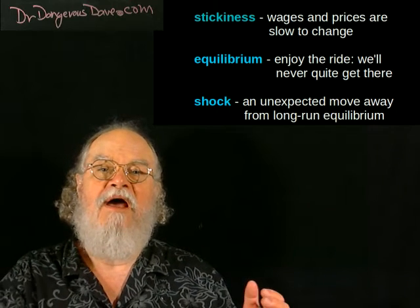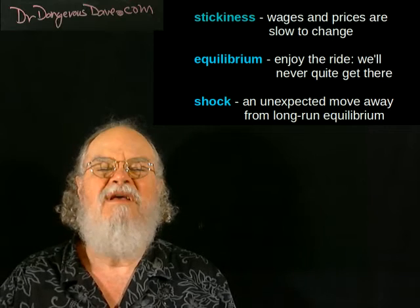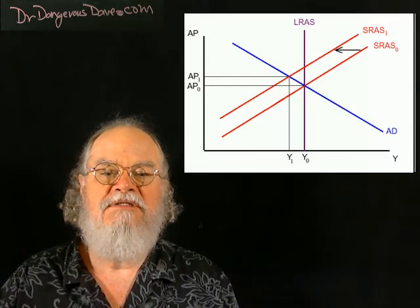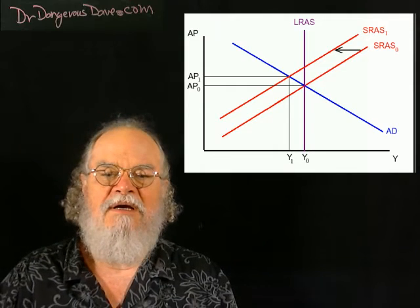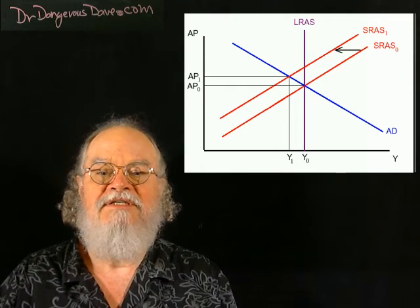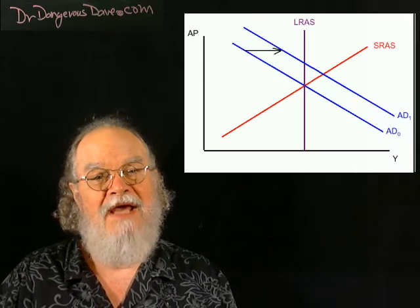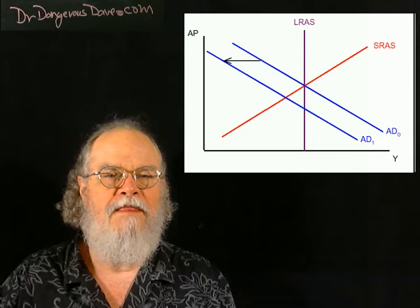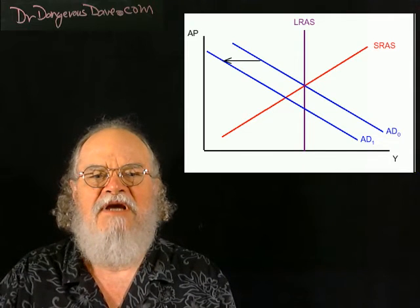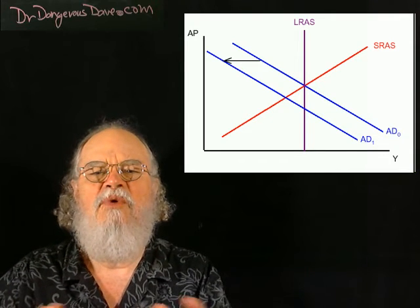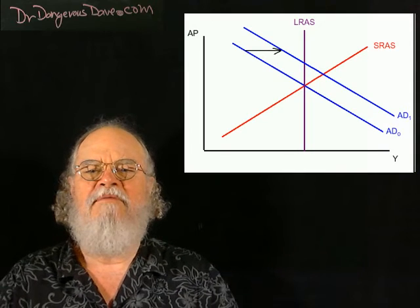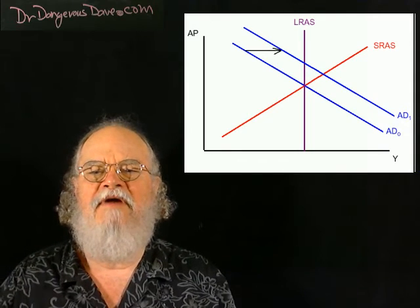Anything that moves the macroeconomy away from equilibrium is called a shock. A sudden spike in energy costs? A supply shock. A sudden increase in consumer demand? A demand shock. A sudden fall in investment by firms? Another demand shock. We call it a negative shock if it moves the economy to a lower level of output, and a positive shock if it moves the economy to a higher level of output.